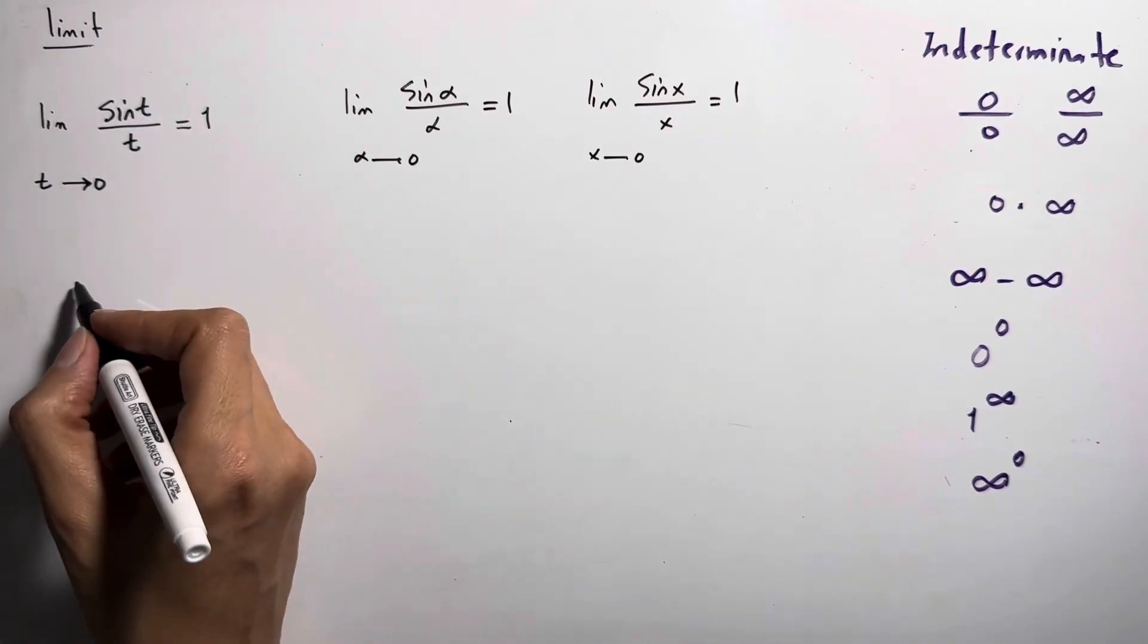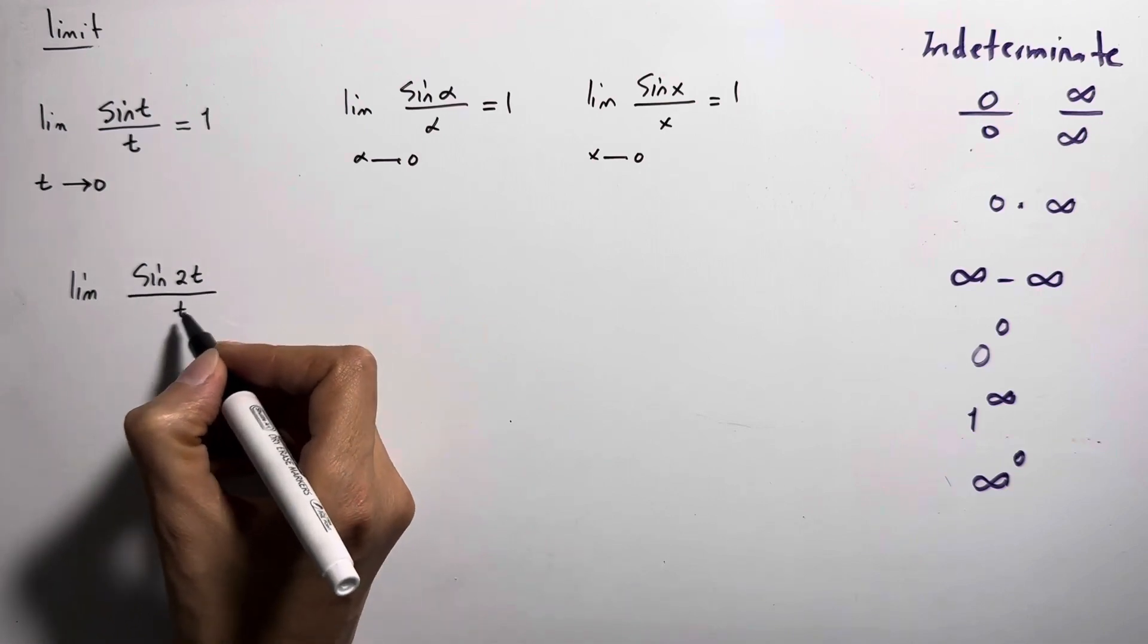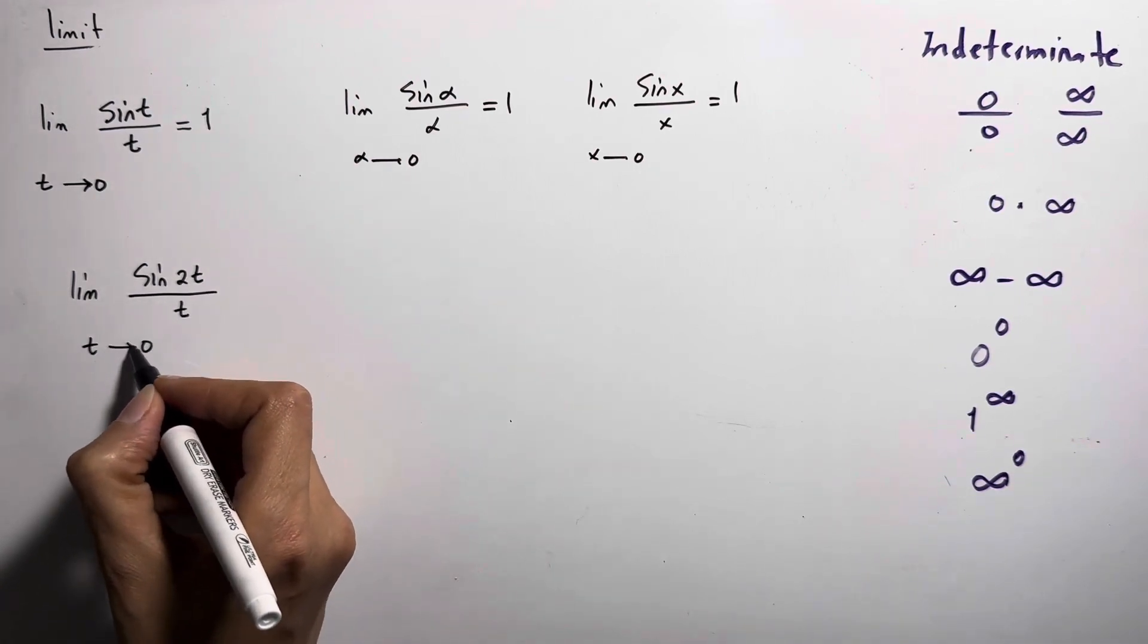Now what if I change this? Suppose I ask you to find the limit of sine 2t divided by t as t goes to 0.